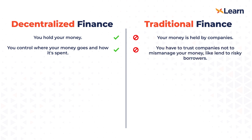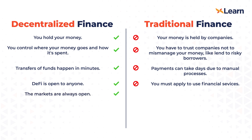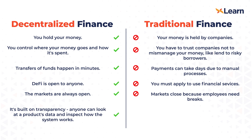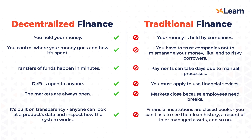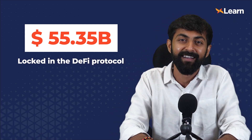In traditional finance, you have to trust companies not to mismanage your money, like lending to risky borrowers. In DeFi, transfer of funds happens in minutes, but in traditional finance it might take up to many days. DeFi is open to anyone, irrespective of which country you are from, but in traditional finance you have to apply for services with a lot of documents. DeFi is open 24/7, whereas traditional finance is not. DeFi is built on transparency — anyone can inspect how the system works, whereas financial institutions are closed books. Already, $55.35 billion is locked in the DeFi protocol running on the Ethereum blockchain.